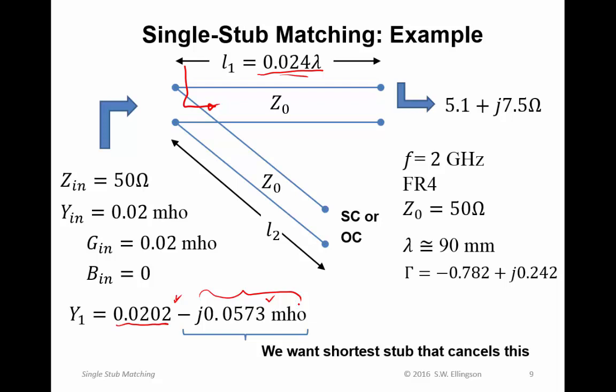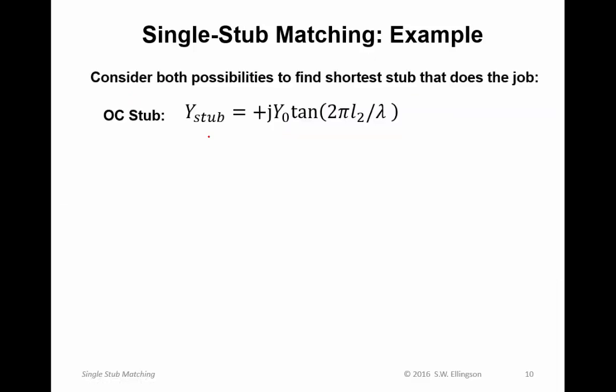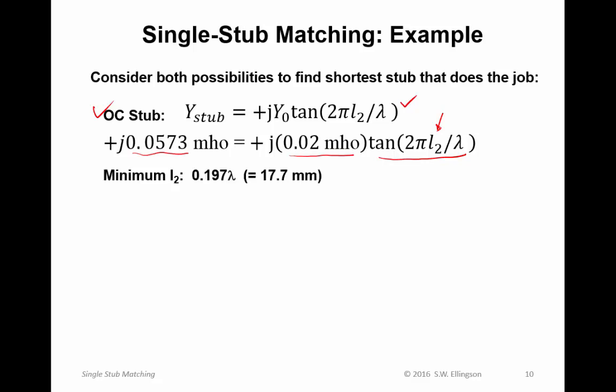The way to do that is to use the parameters we have left unconstrained, namely the choice of stub length as well as how it's terminated. We want the shortest length, because there are multiple lengths that will work here, that will eliminate this when I combine the stub in parallel with the primary line. So we consider both possibilities and find the shortest stub that does the job. For an open circuited stub, here's the expression. Substituting values, this equation requires plus j0.0573 Mhos to equal plus j0.02 Mhos times the tangent of 2 pi L2 over lambda. I find that L2 is 0.197 wavelengths, that is 17.7 millimeters.